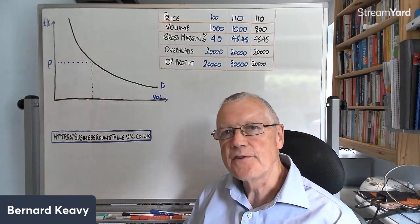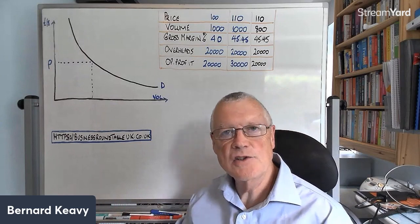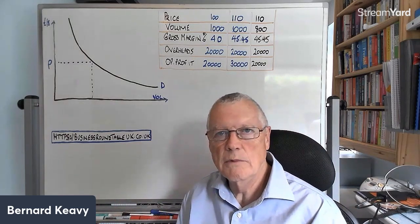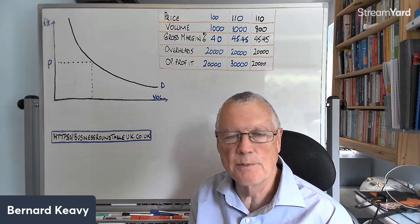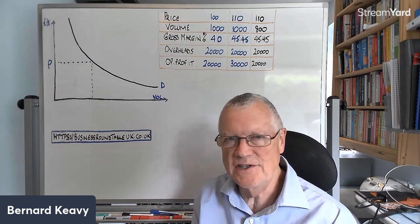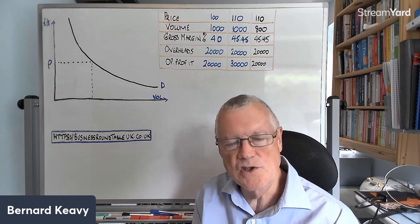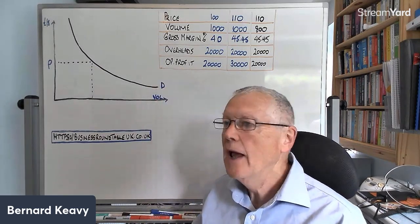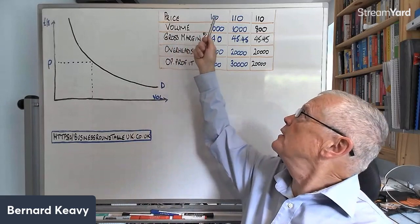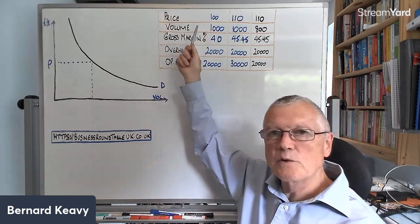So then you start to think, well what if I could actually charge more on average when people buy from me? That may mean putting your prices up, but there's also 20 or 30 other different ways you can achieve the same thing by getting people to spend more when they buy from you. And the way it works is: if you know your price and you know your volume, that will tell you your revenue.